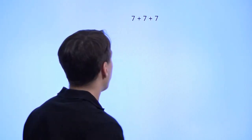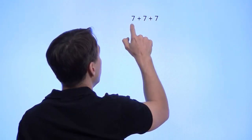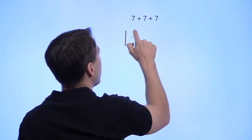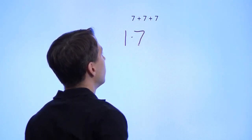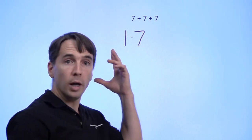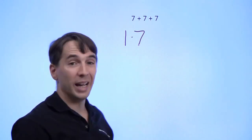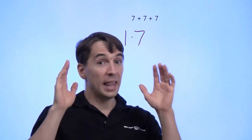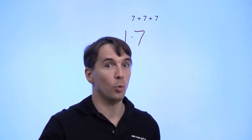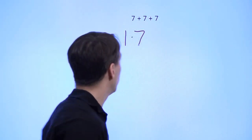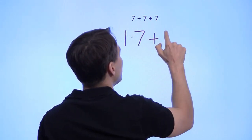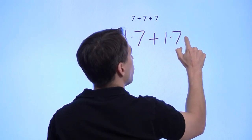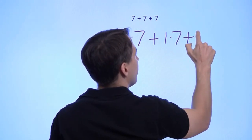The first of those good math rules is 7 equals 1 times 7. Because you take 1 and multiply it by any number, you get that number back. And that's how we define 1, so that's a perfectly good math rule. So each of these 7s is just 1 times 7.